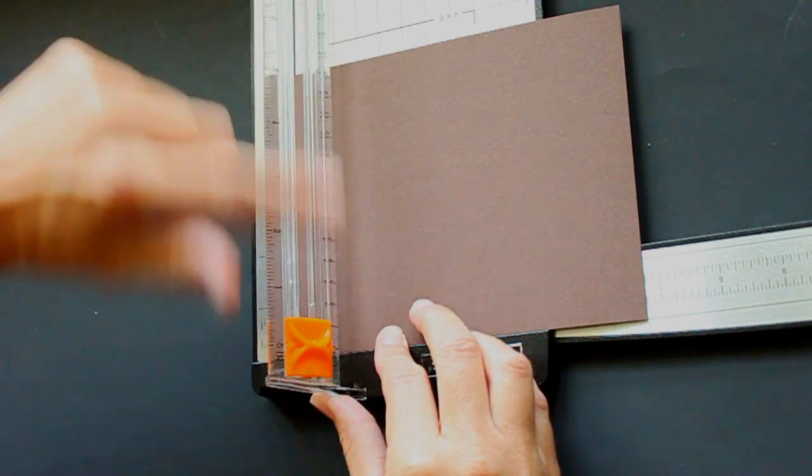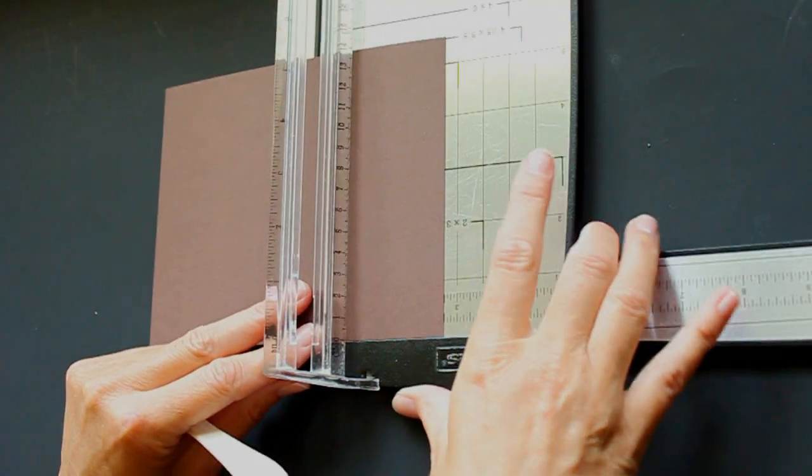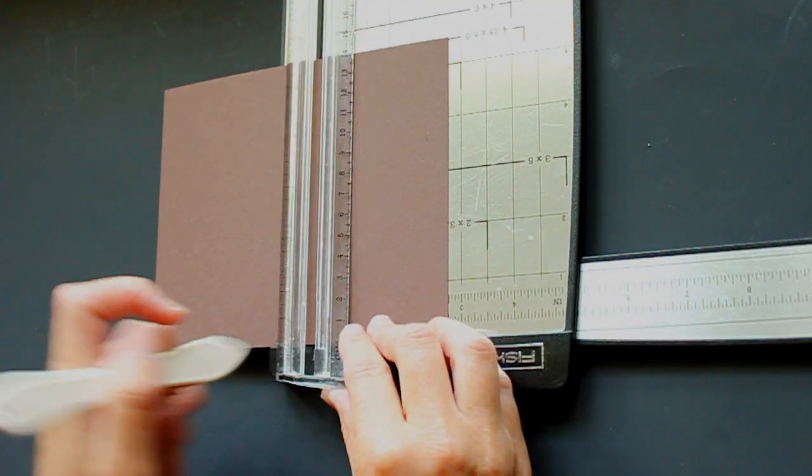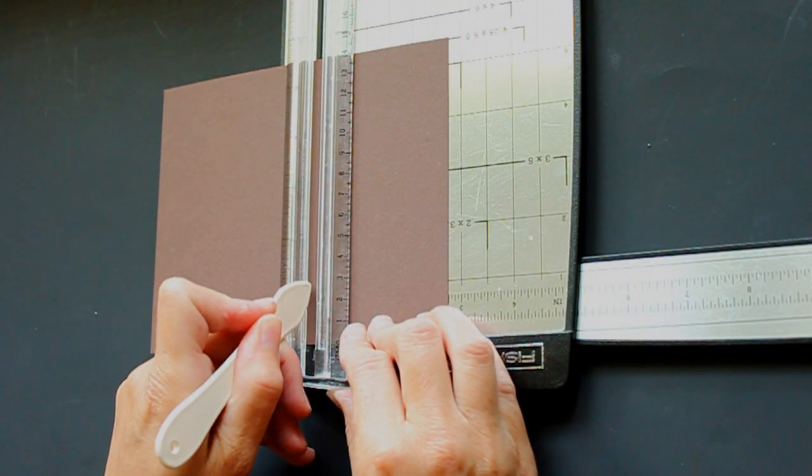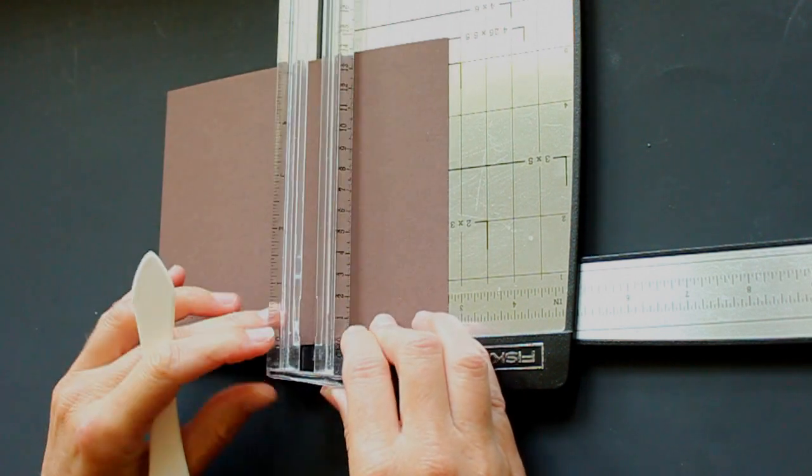You line up your paper at 2 3⁄4 and you score from 0 to 1 1⁄4. I like to go backwards, it's easier. And from 4 1⁄4 to 5 1⁄2.